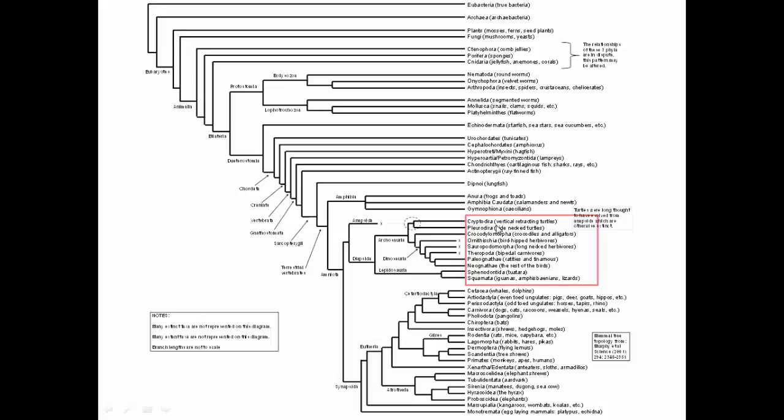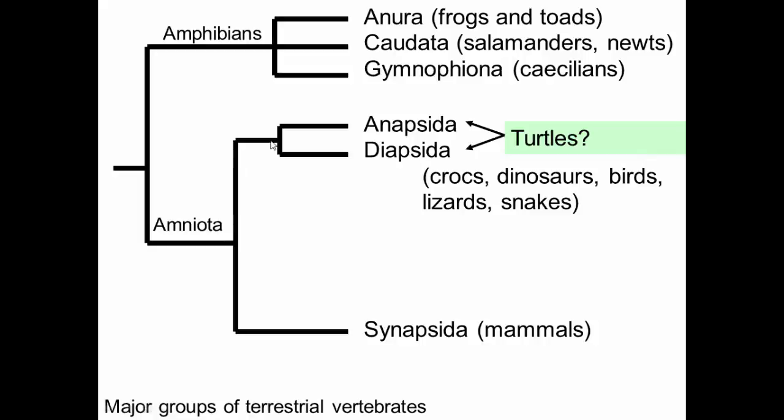Continuing our tour of the phylogeny, we'll be looking within the amniotes at reptiles and birds. We looked at amphibians and amniotes. Within amniotes, there are two major groups: the anapsids and diapsids, which are going to be reptiles and birds, and then the synapsids, which are where mammals come from. So let's look at this group of reptiles and birds.